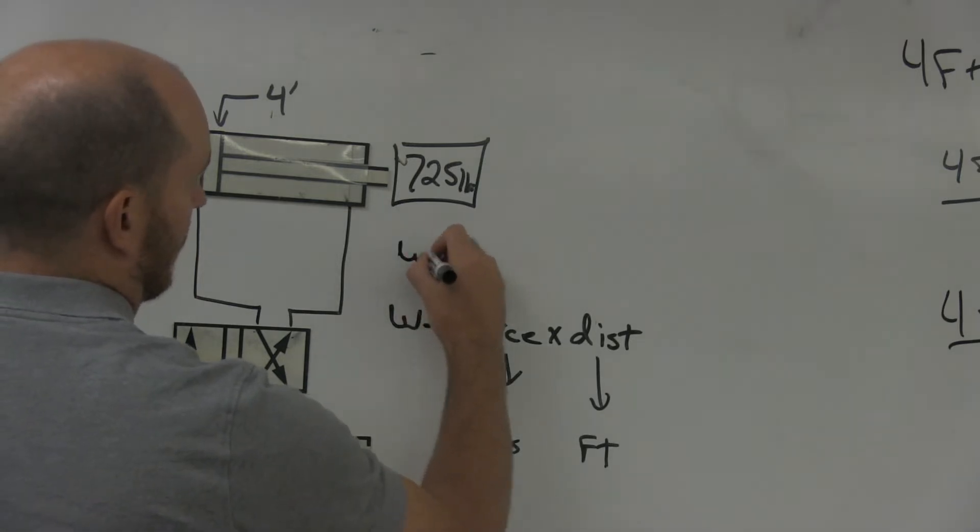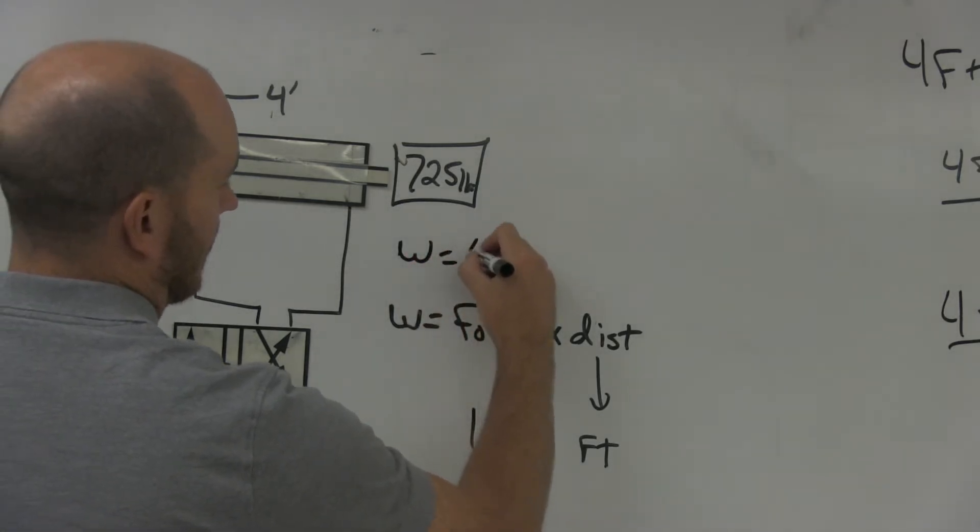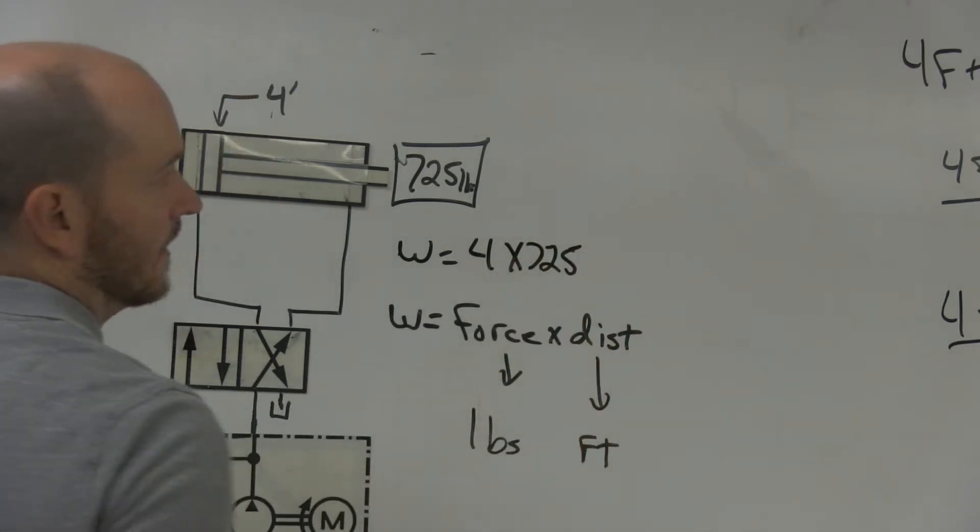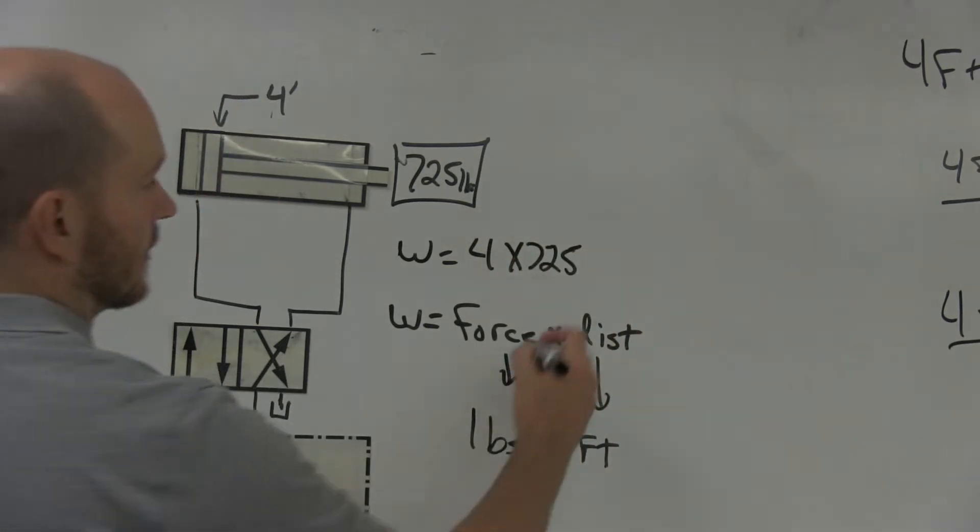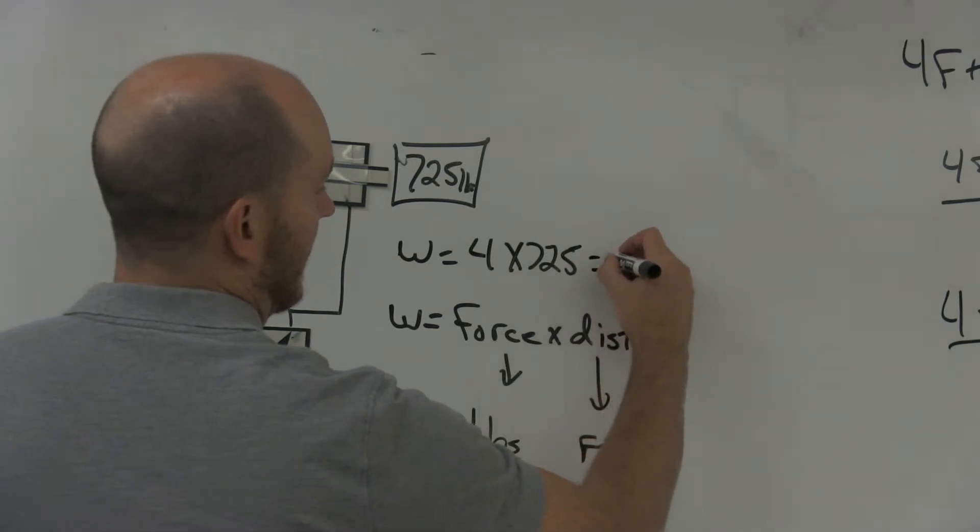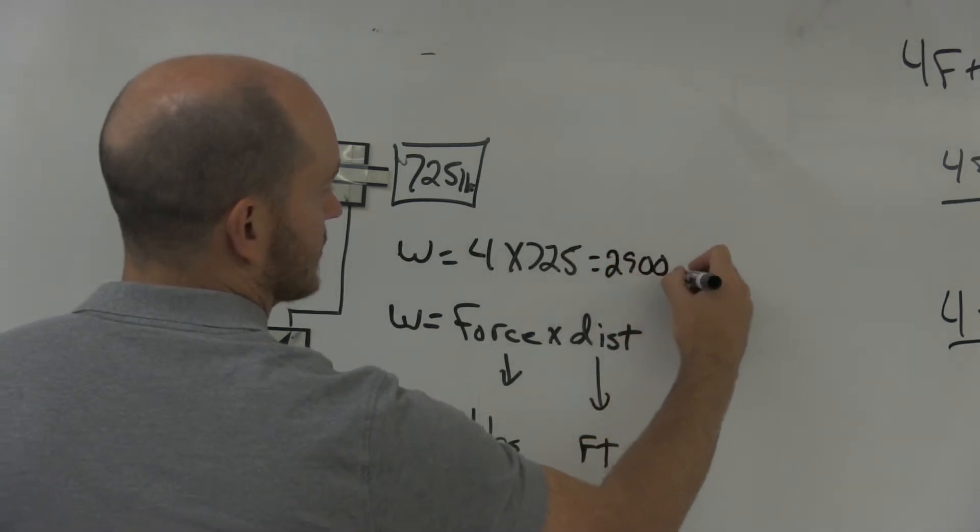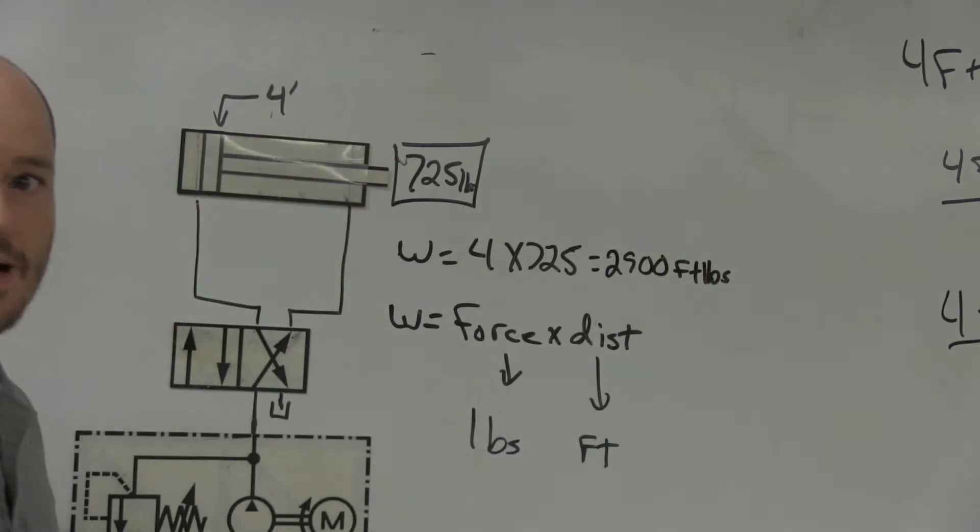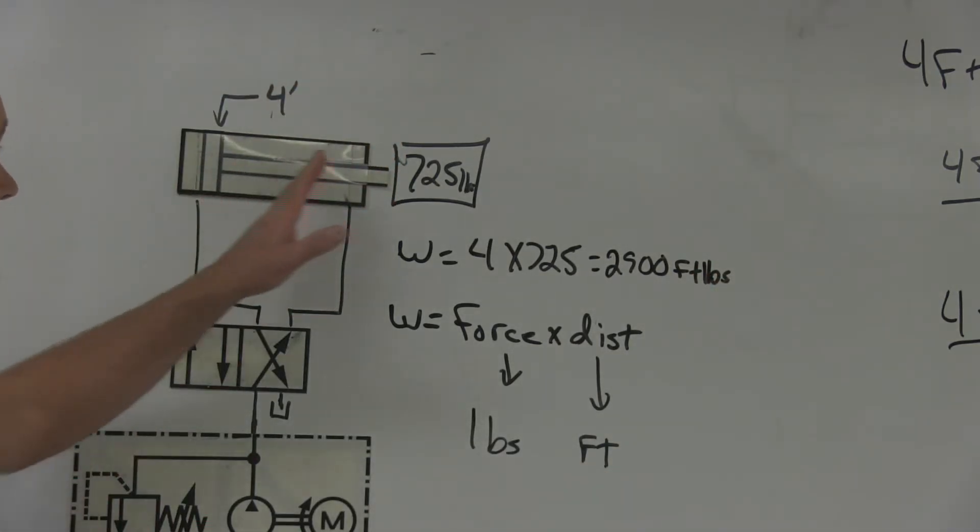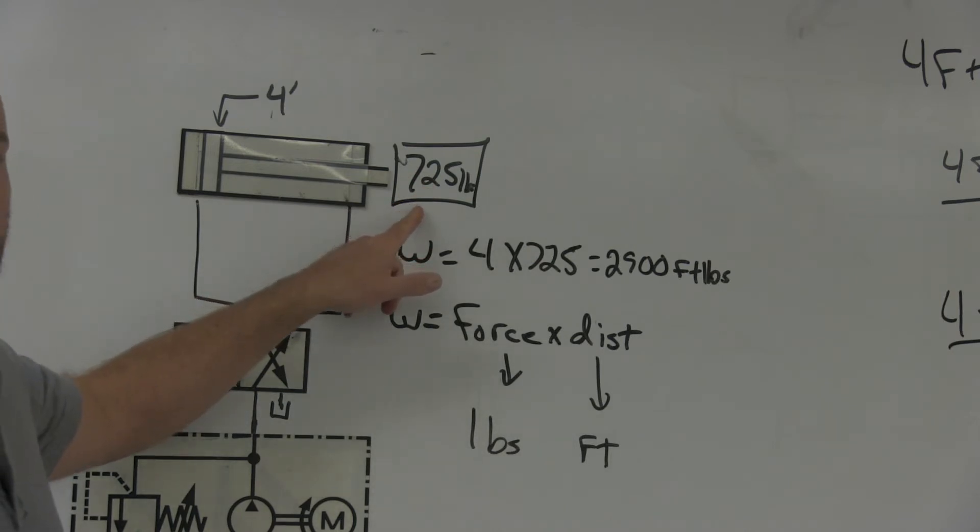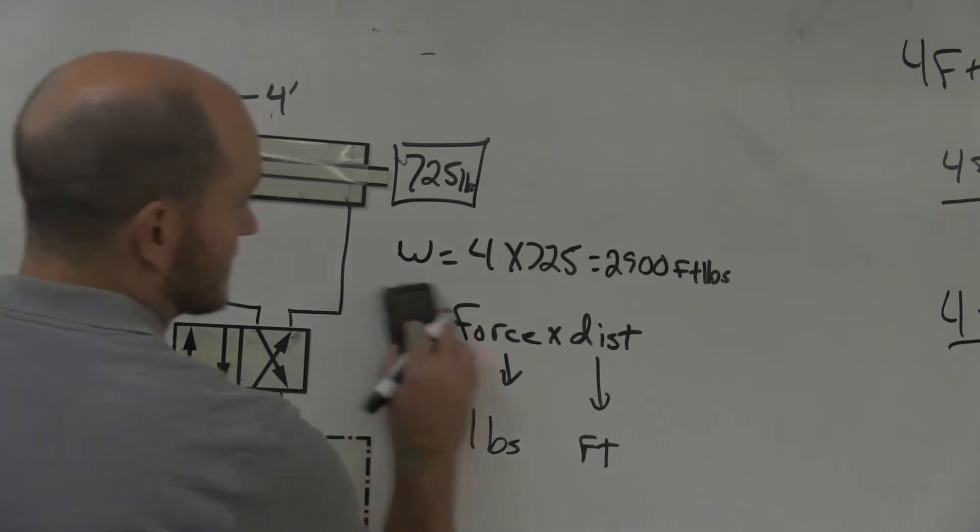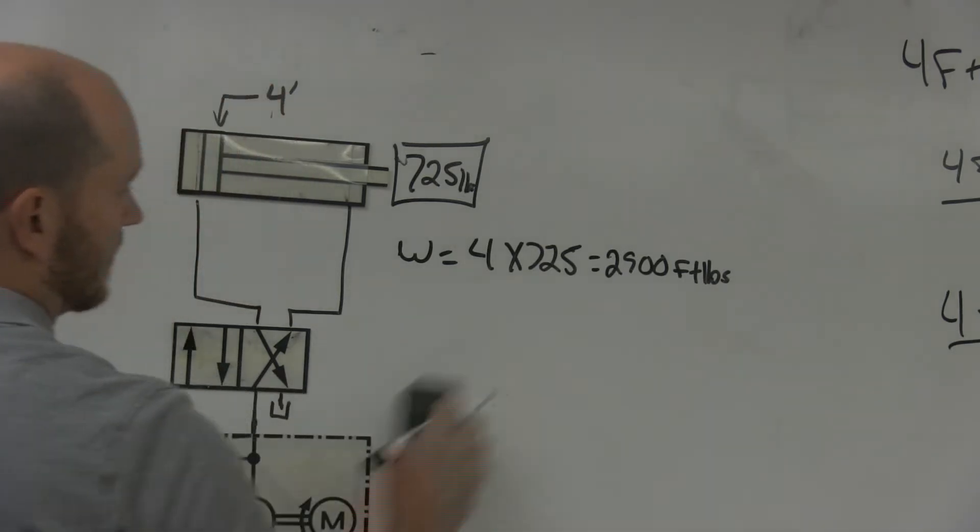So work equals 4 times 725. Type that into your calculator and you'll see that's 2,900 foot-pounds of work being accomplished. I just take the distance of travel times how much force is required to move an object.